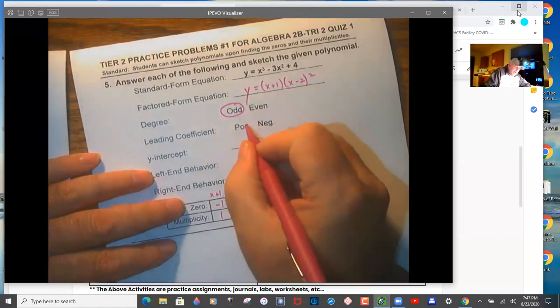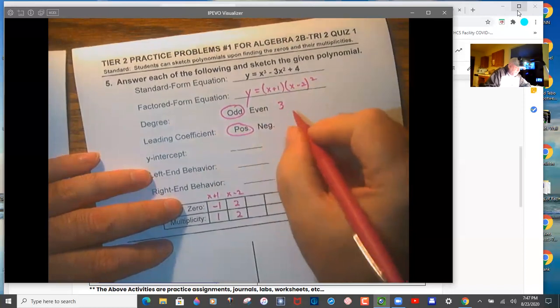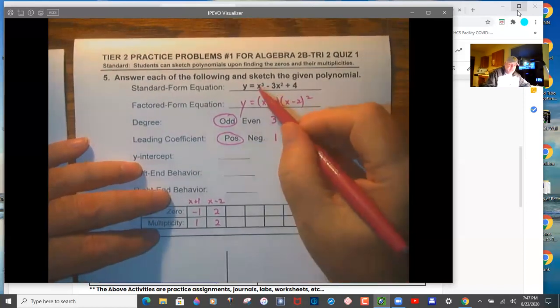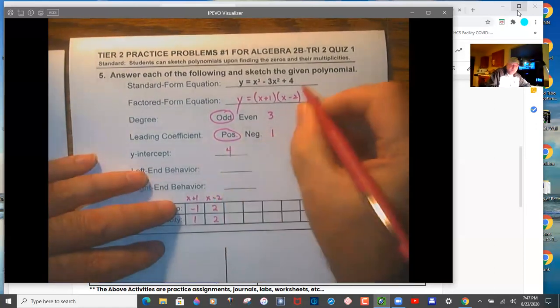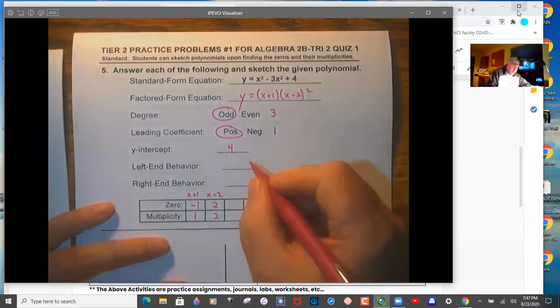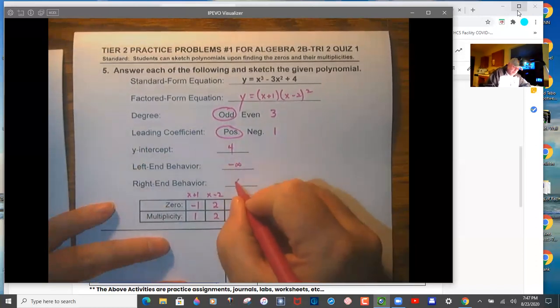So we have an odd positive. We have degree three. Leading coefficient is one. You can get that from the standard equation. Y-intercept is four. You can get that from the standard equation. Here are the end behaviors.